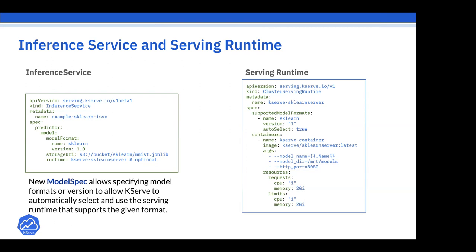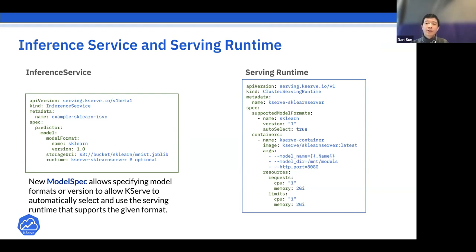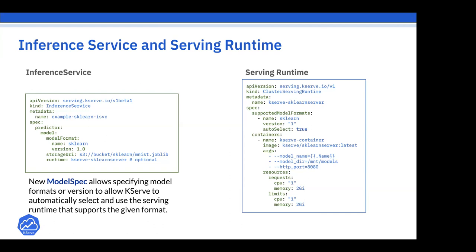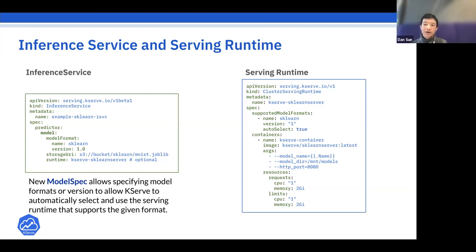For autoscaling, there are different options. For the serverless installation, it uses KPA from Knative, which scales based on QPS. There's also a raw Kubernetes deployment mode that uses standard HPA. KServe provides different installers depending on whether you want serverless or not.